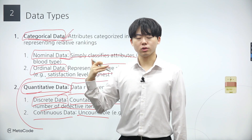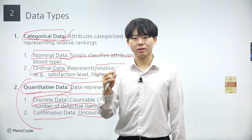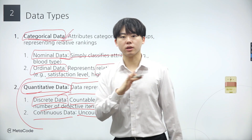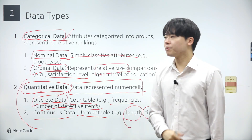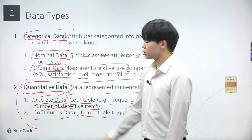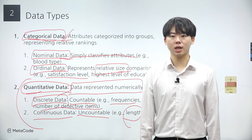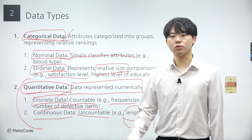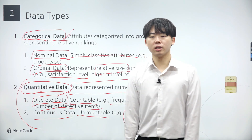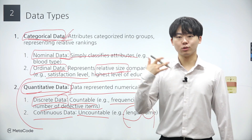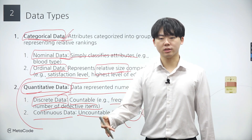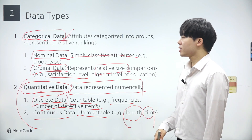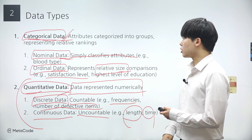Furthermore, even though specific types of data may not be explicitly mentioned as it progresses through the lecture, you should develop the skill to differentiate between discrete data, characterized by distinct and separate values, and continuous data, which spans a continuum of values based on the context and characteristics of data being discussed. Being able to classify data into appropriate types will make data analysis easier.